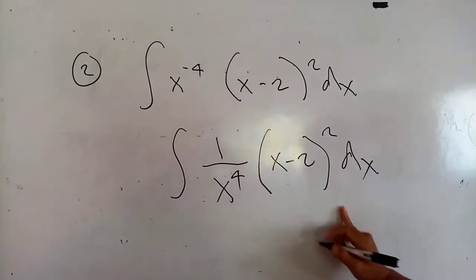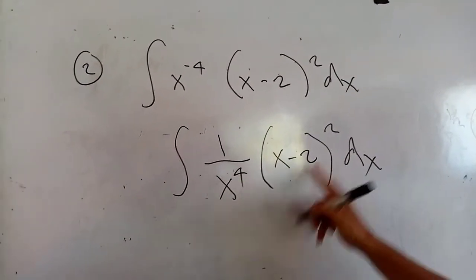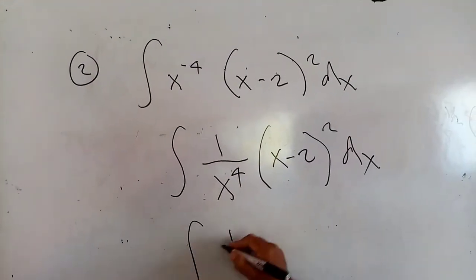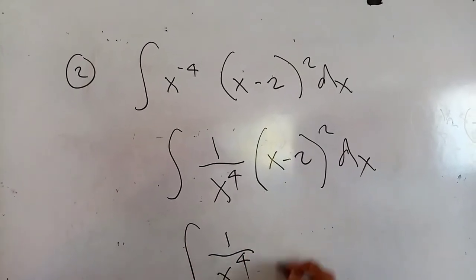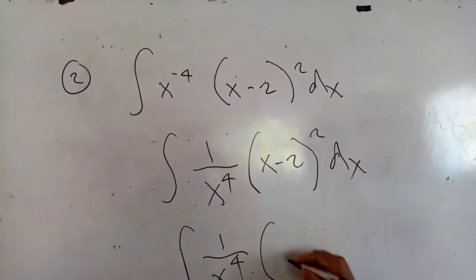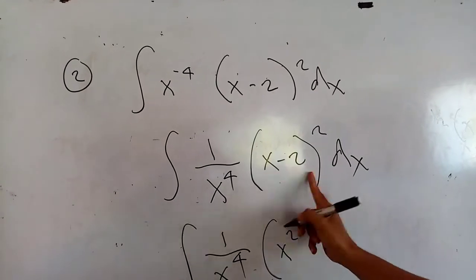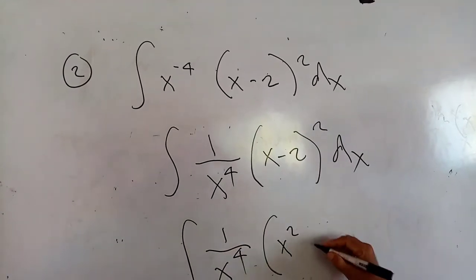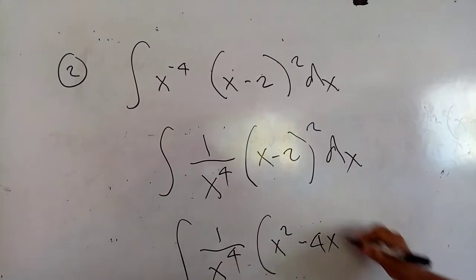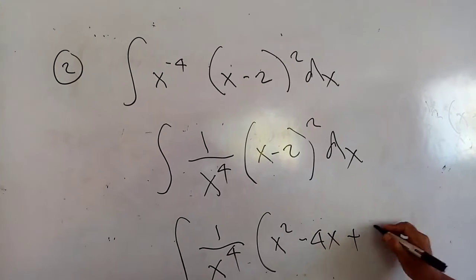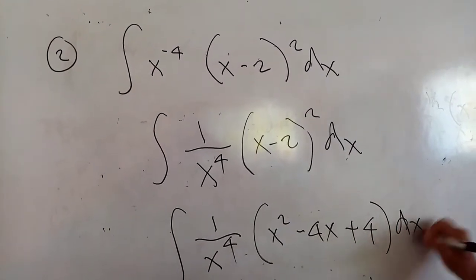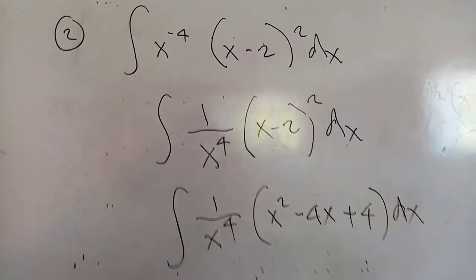To go step by step, this is a binomial squared: that would be the integral of 1 over x to the 4, multiplied by the square of the binomial — x squared minus 4x, plus the square of the second which is positive 4 — still multiplied by the differential dx.